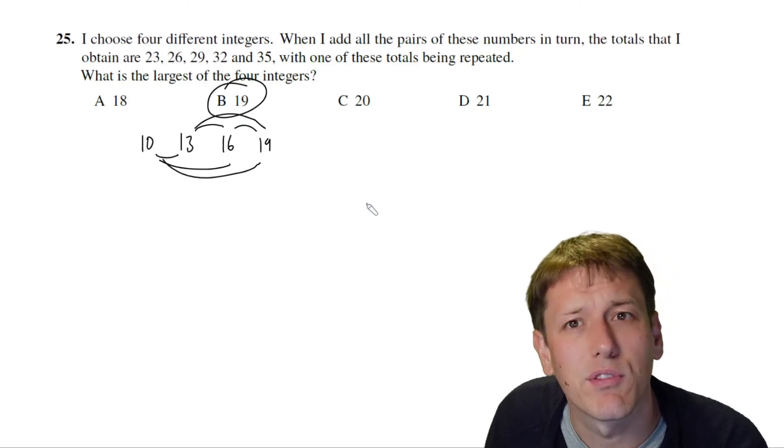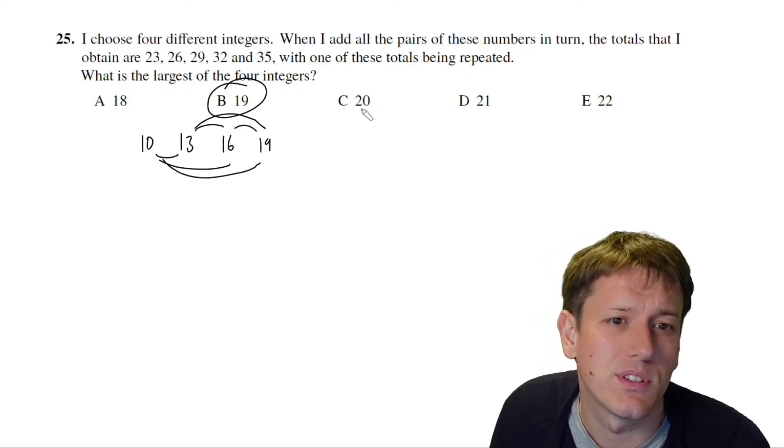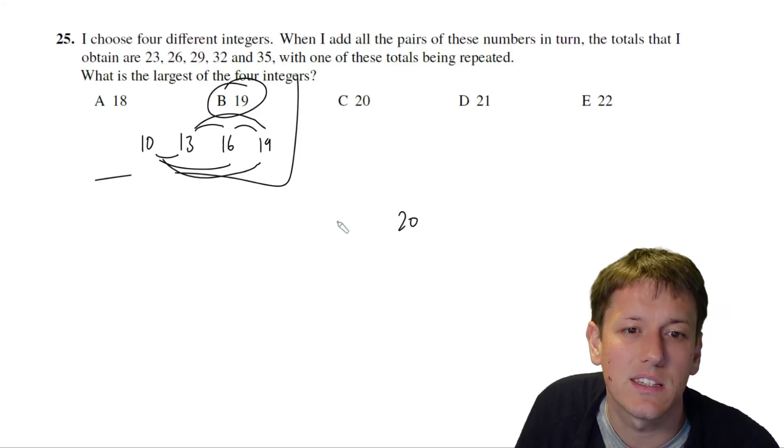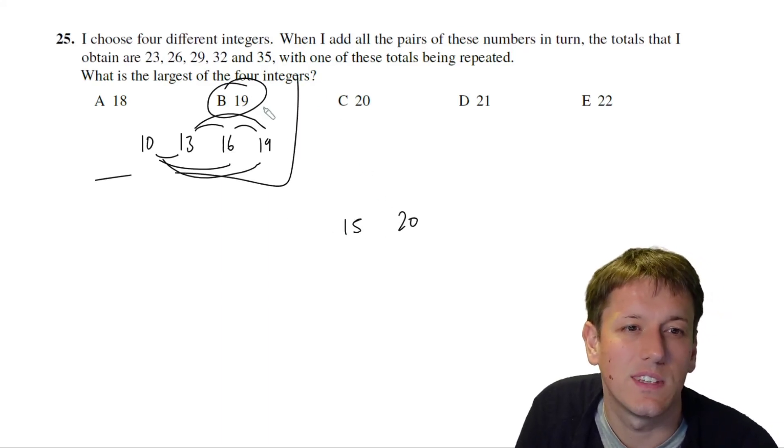So again, I've been a bit lucky that, you know, the correct answer was one of the earlier ones, but even if it wasn't, I could be going through and eliminating the other options here, right? So for 20, if 20 was the biggest option, if C was the right answer and 20 was the biggest, it would have to be 20 and 15 to get 35.